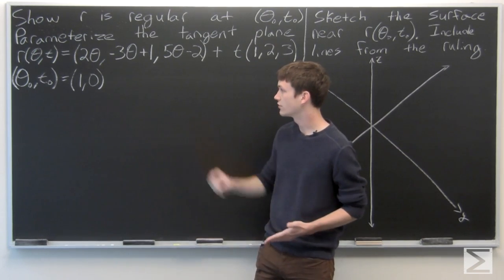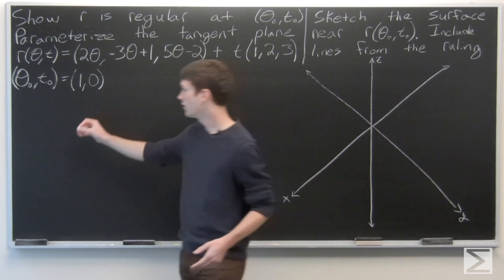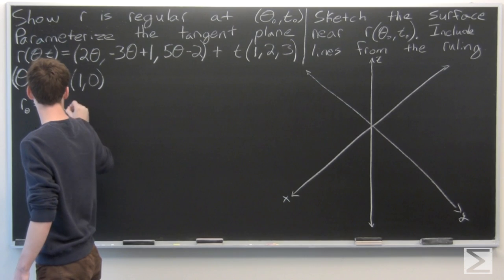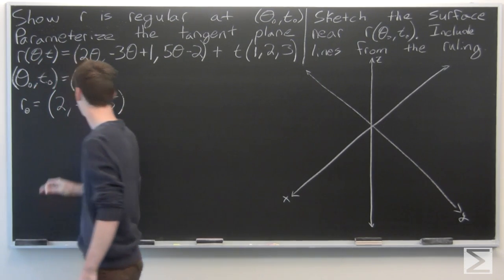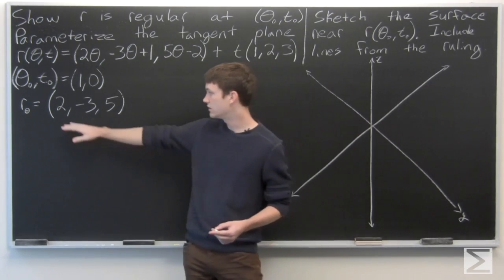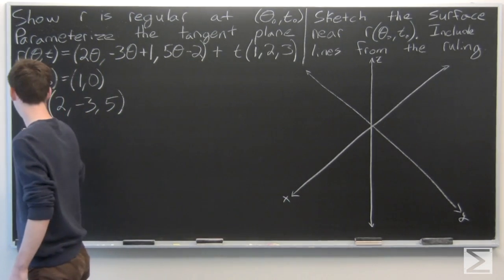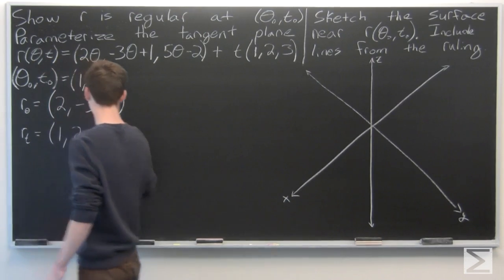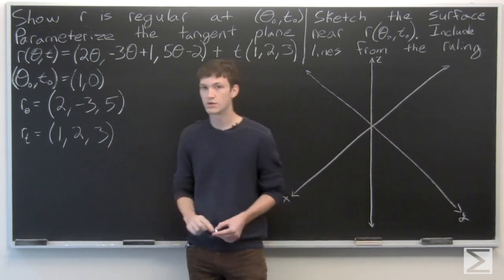First we want to show that r is regular, so we'll do that by taking the partial derivatives of r. We see that the partial derivative of r with respect to θ is (2, -3, 5), and the partial derivative of r with respect to t is (1, 2, 3).